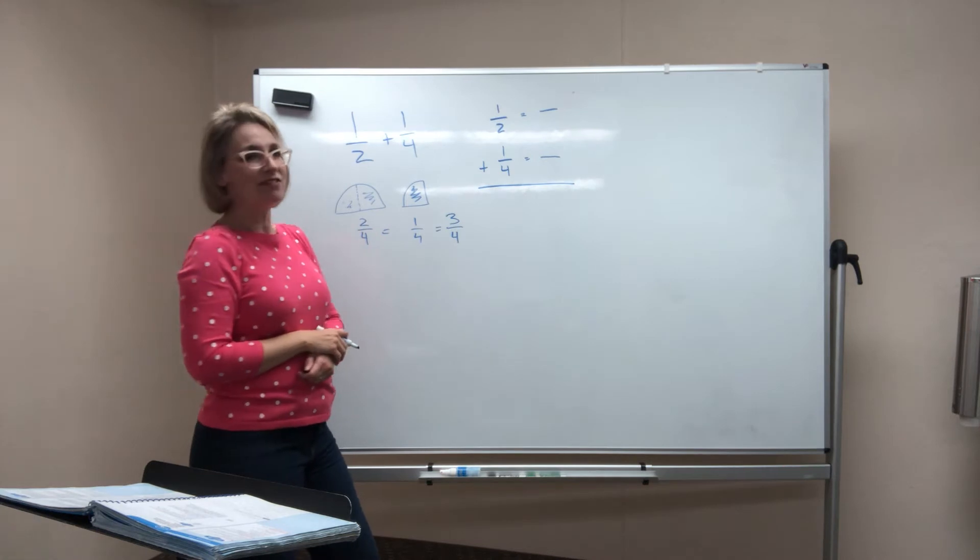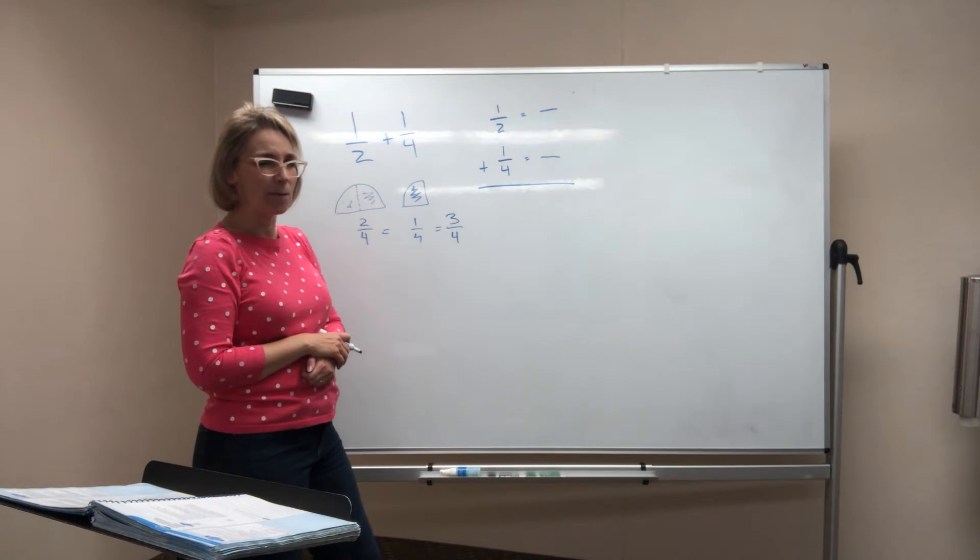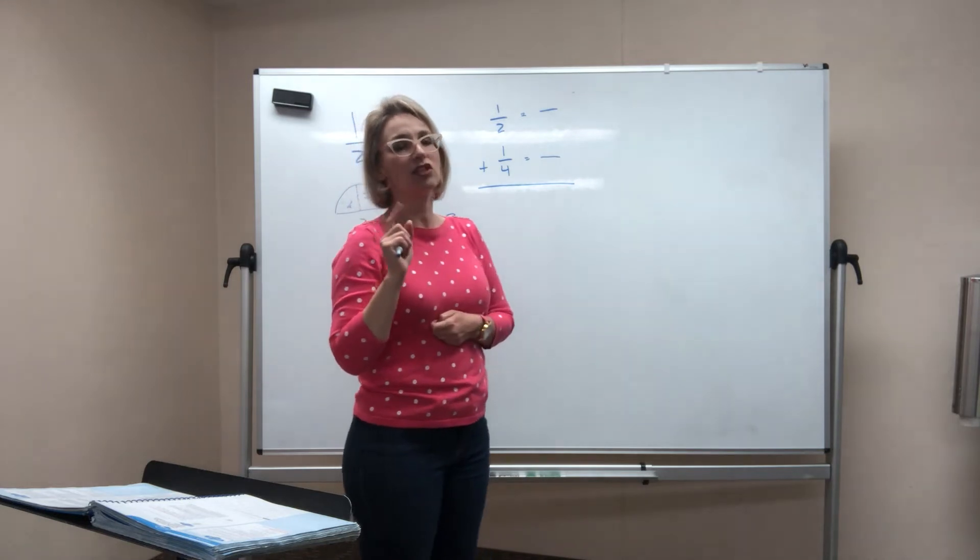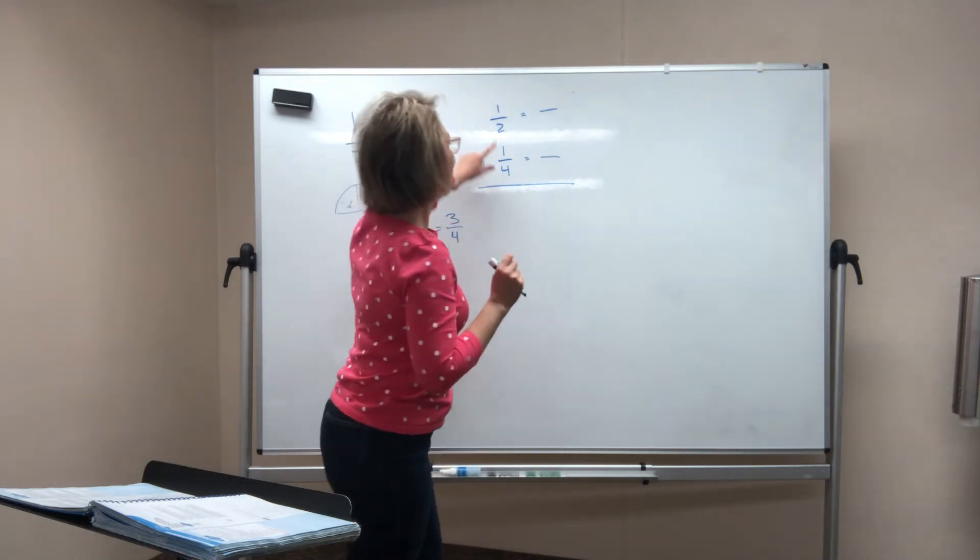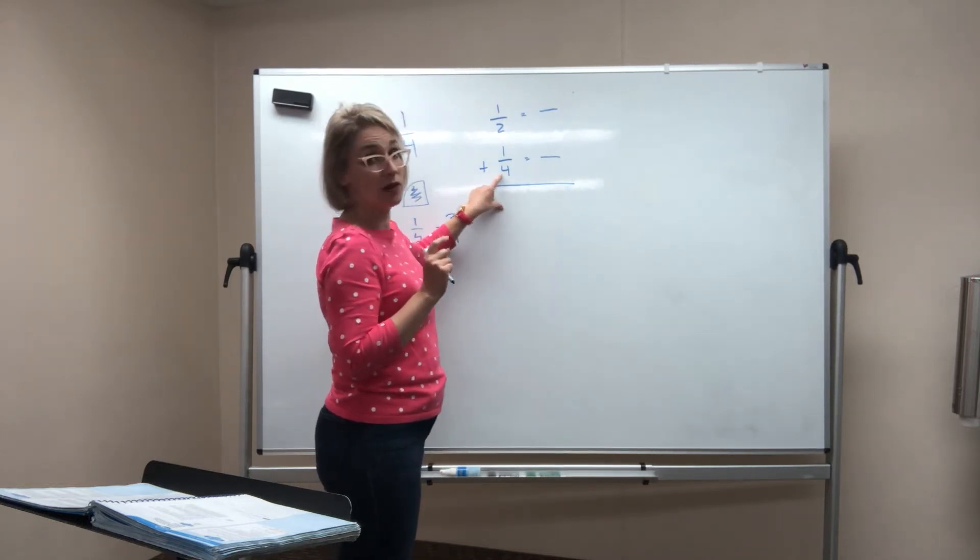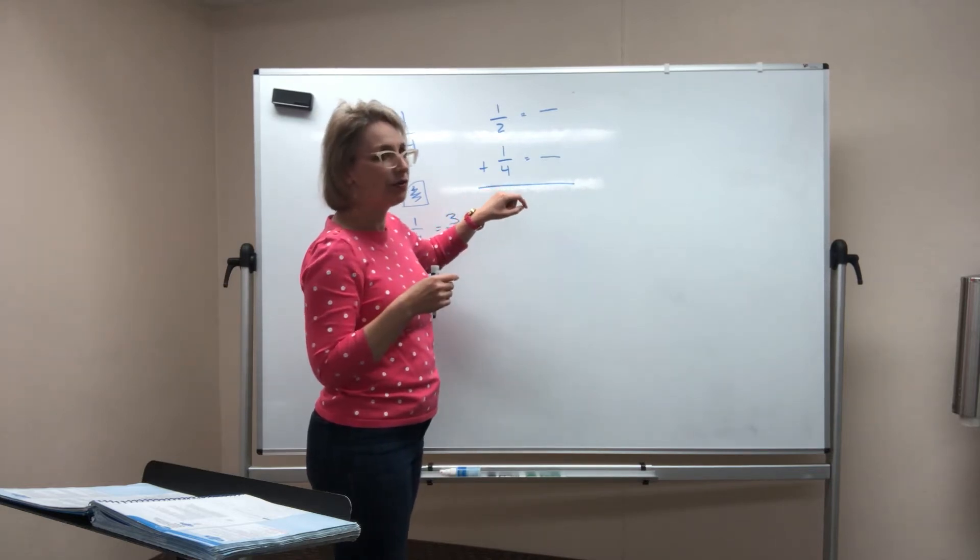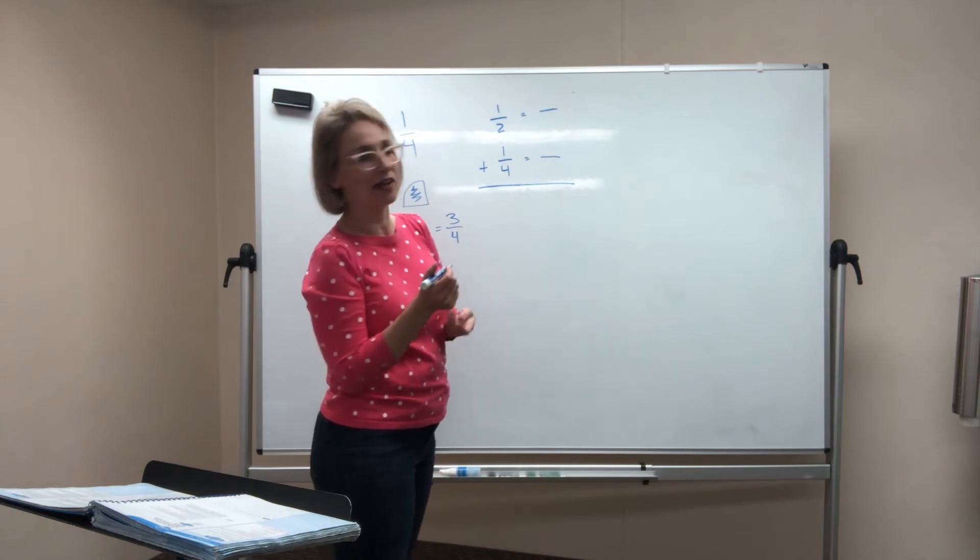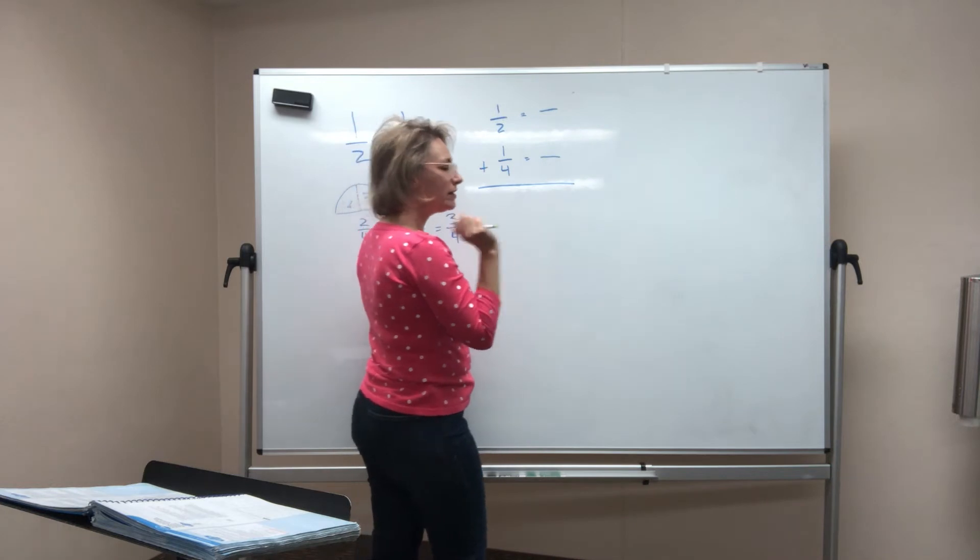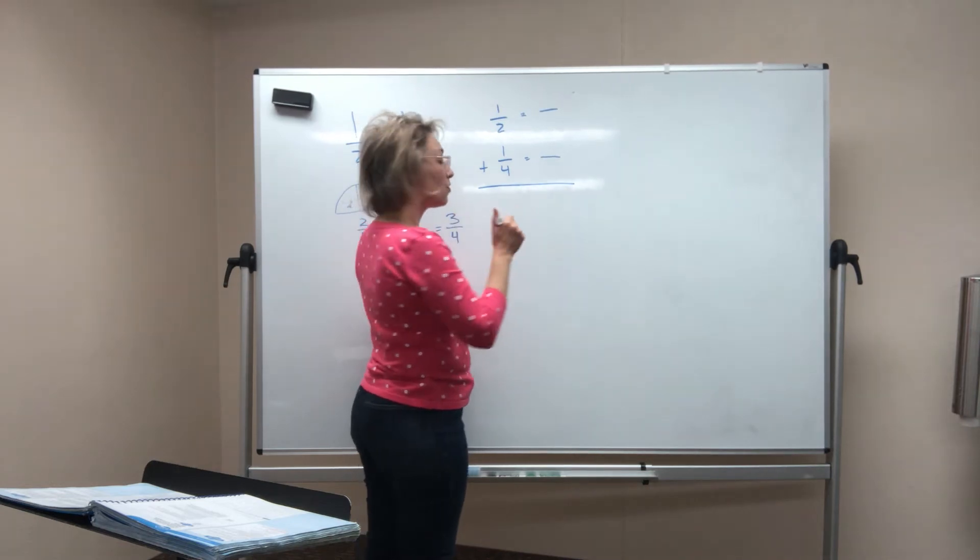We have to figure out what is the least common denominator. That is a term you need to remember forever and always. Least common denominator. That would be the smallest denominator that these guys have in common. So it can't be the smallest number because four can't go into two. Four can only go into four or something bigger than it. So I'm going to say, what is the smallest number that both four and two can go into? Well, it's four, isn't it? Because four can go into four and two can go into four also.